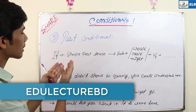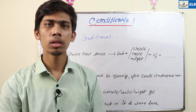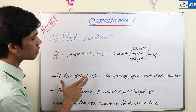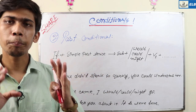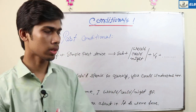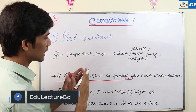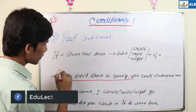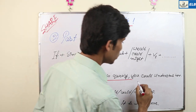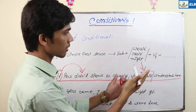If plus simple past tense, then would, could, or might plus bare verb, present form. For example: if you didn't speak so quickly, you could understand her.